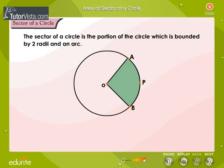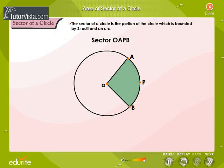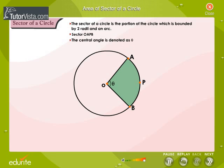In this figure, the sector is bounded by two radii OA and OB and the arc APB. We name this sector as sector OAPB. The angle subtended by an arc at the center of the circle is called the central angle, denoted as theta.